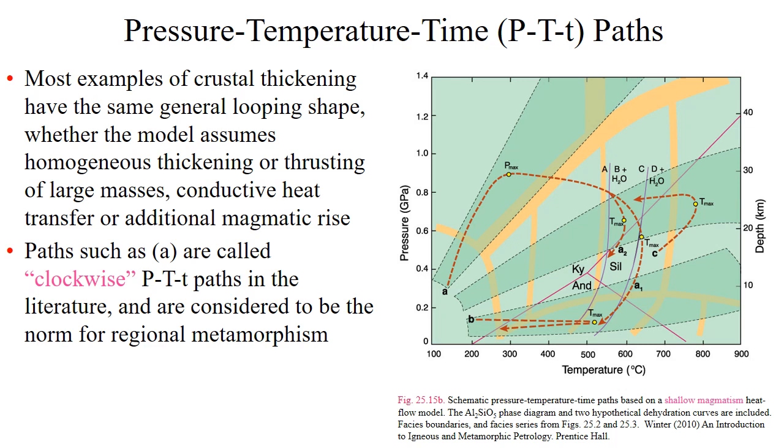Not all granulite facies metamorphism exhibits this counterclockwise behavior, and two paths are commonly recognized. One exhibits a near isothermal decompression in the range of 550 to 950 degrees Celsius. The second path may represent an uplift or collapse following crustal thickening of path A. Counterclockwise P-T-t paths are not restricted to granulite facies terrains and can occur anywhere associated with high magmatic heat flow.